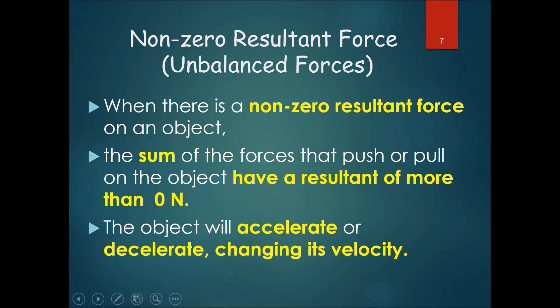This changes when you have unbalanced forces, or if your resultant force is not zero. When there is a non-zero resultant force on an object, the sum of the forces that push or pull on the object have a resultant of more than zero newtons, and this object will accelerate or decelerate, changing its velocity.